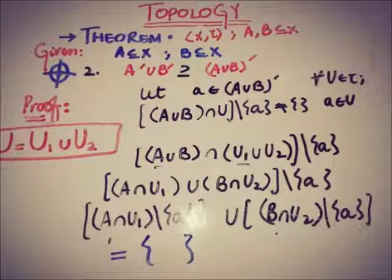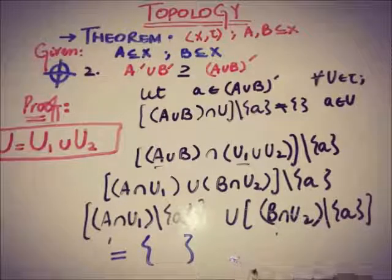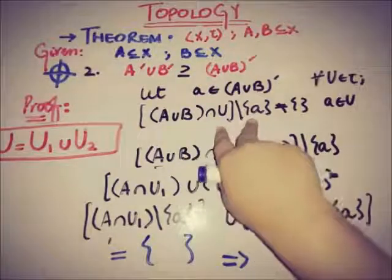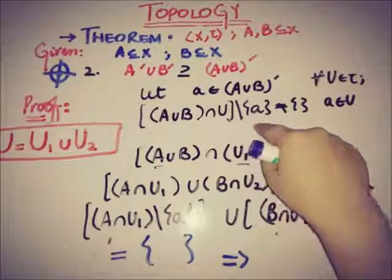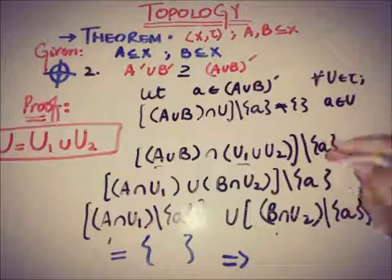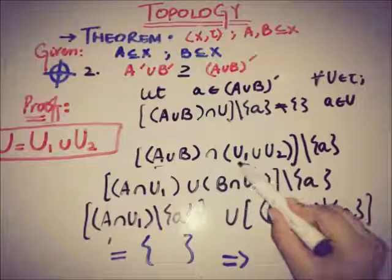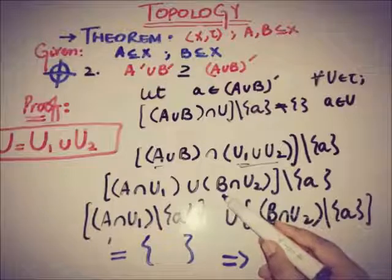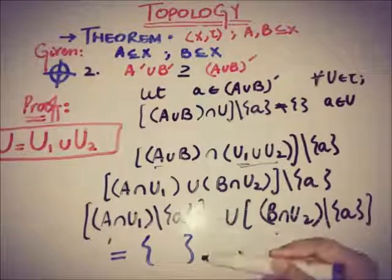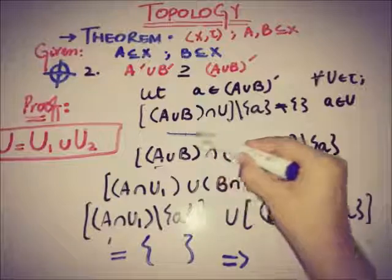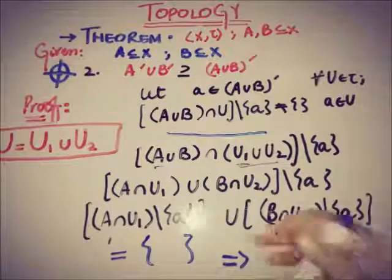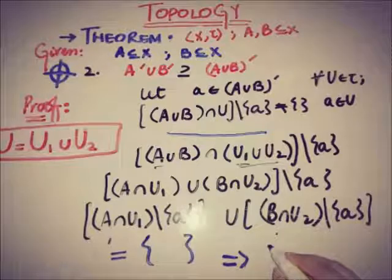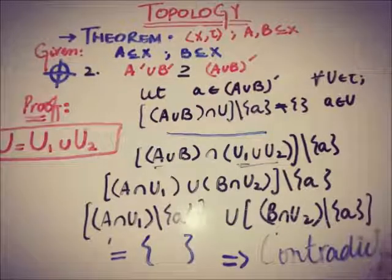So the entire expression (U∩(A∪B))\{a} equals the empty set. But this contradicts the definition of a being in (A∪B)', which requires this intersection to be non-empty. Therefore our assumption was wrong.